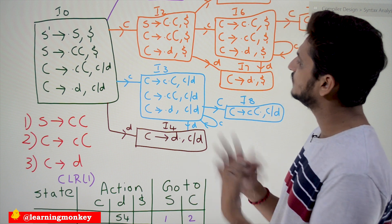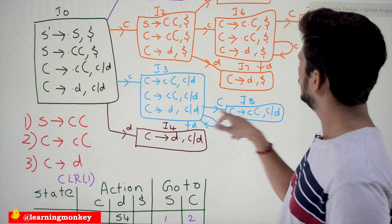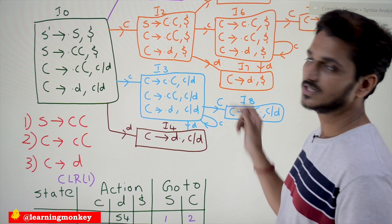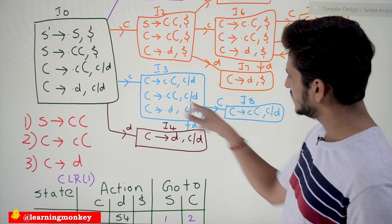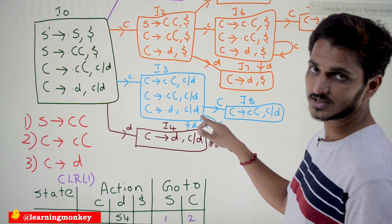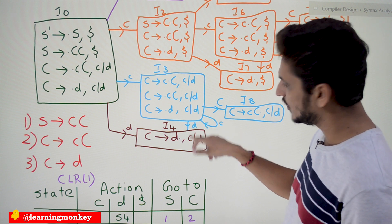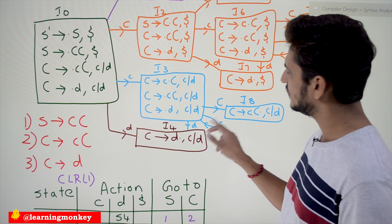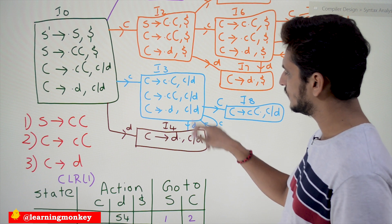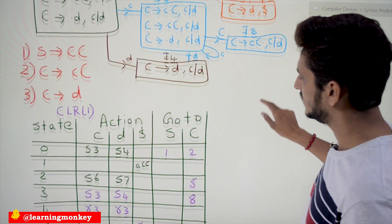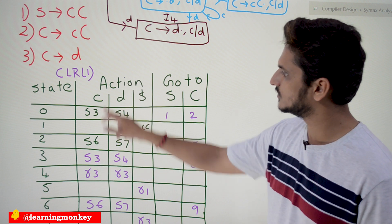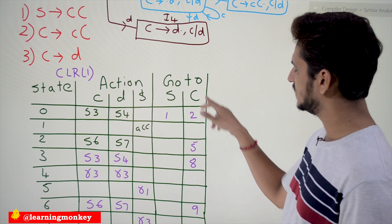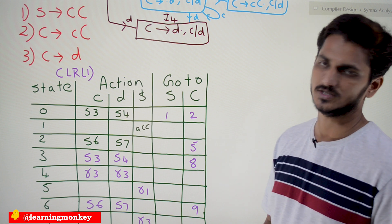For state i3: this is also not a completed state, so we do shift actions. If you see capital C we are moving to i8 state — write that in Go-To because capital C is a non-terminal. If you see small c, shift to 3rd state; if you see small d, shift to 4th state. So i3 Action: shift to 3 on c, shift to 4 on d; Go-To: 8th state on capital C.